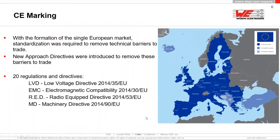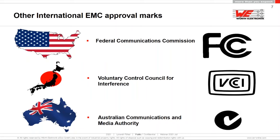Depending on the country outside Europe — like the US — you have to comply with the FCC. FCC, in comparison with CE, is different because FCC doesn't require immunity tests. You are only measured for emission; they say immunity is a quality issue. Japan has VCCI, Australia has C-Tick, China has CCC. You will find EMC regulation in every civilized country.